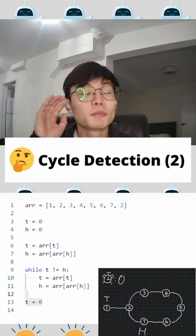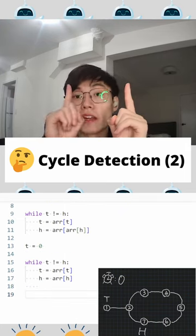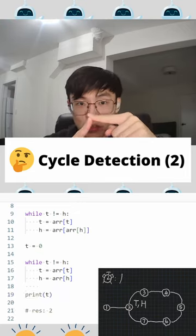Once the hare meets up with the tortoise, we set the tortoise back to index 0. If the tortoise moves one step, the hare moves one step until they meet each other. The place where they meet will be the entrance of the cycle.